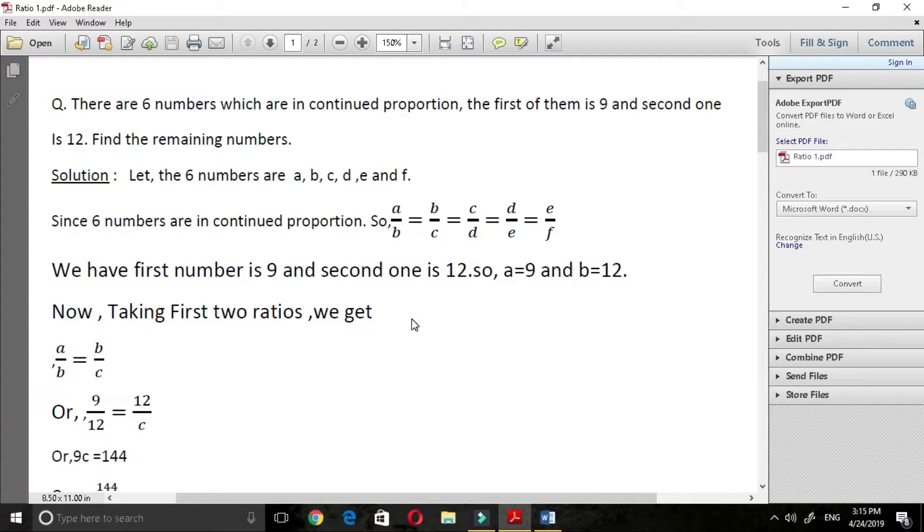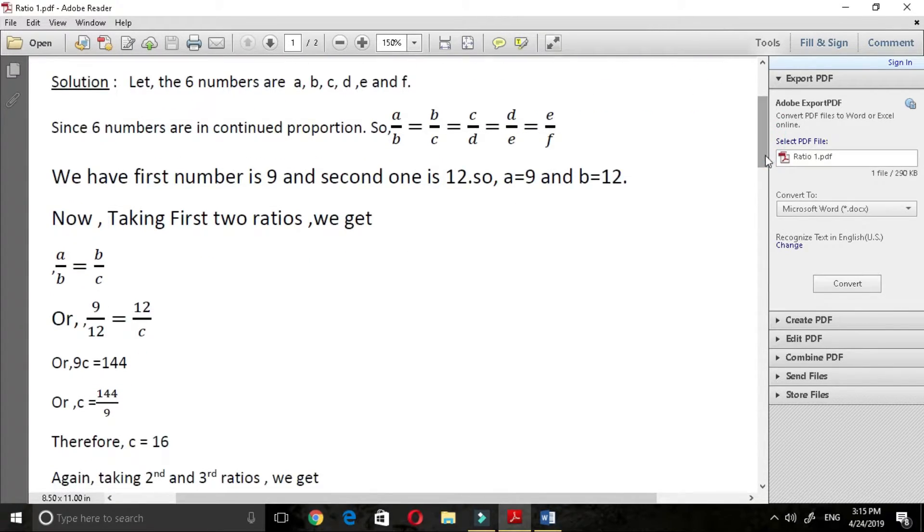Now, taking first two ratios, we have the value of a is equal to 9 and b is equal to 12 and we get c is equal to 16. After calculation,